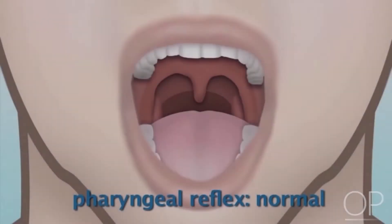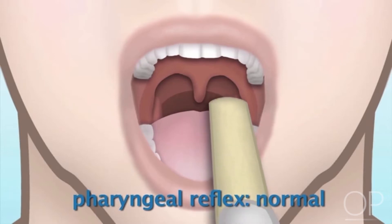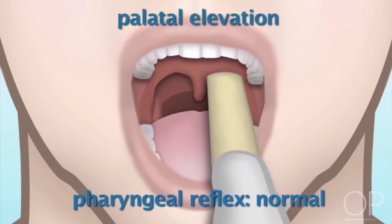Pharyngeal Reflex. With a normal and intact pharyngeal reflex, when you insert a tongue blade deep into the back of the patient's throat, you will see that the palate will elevate.